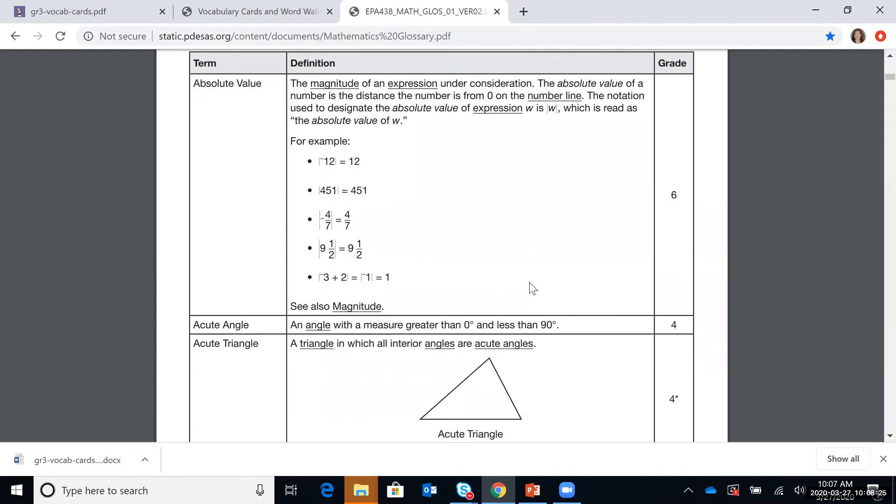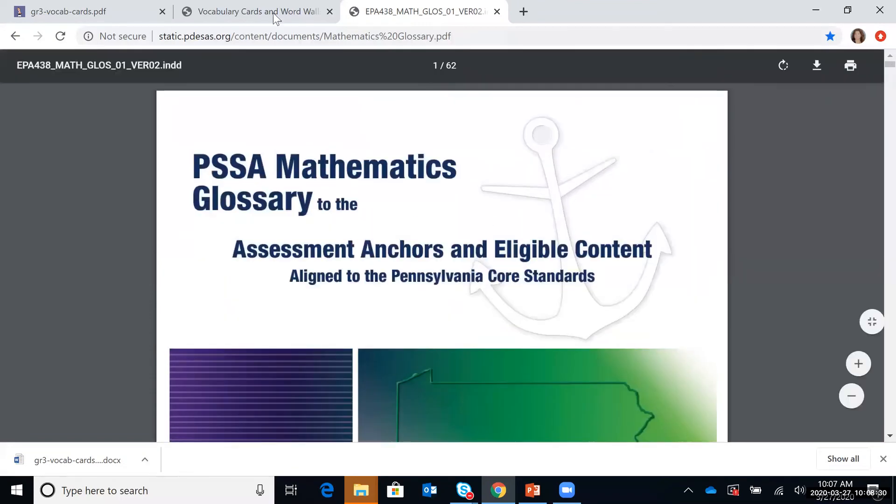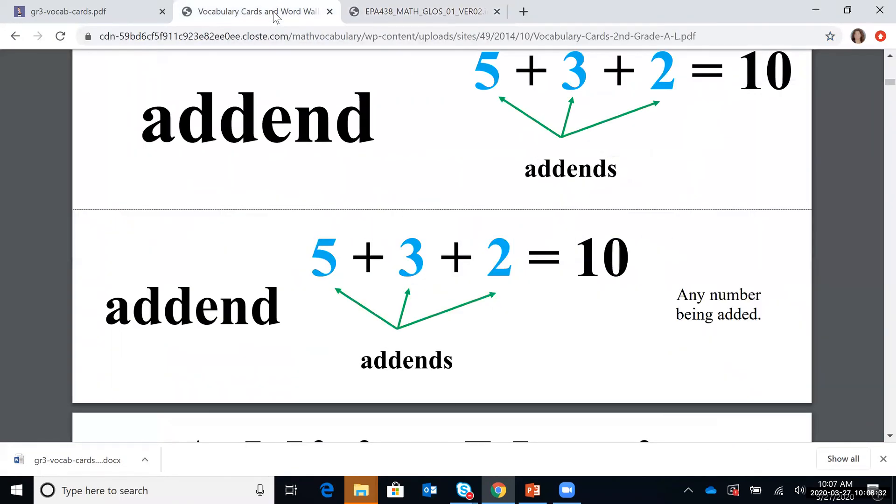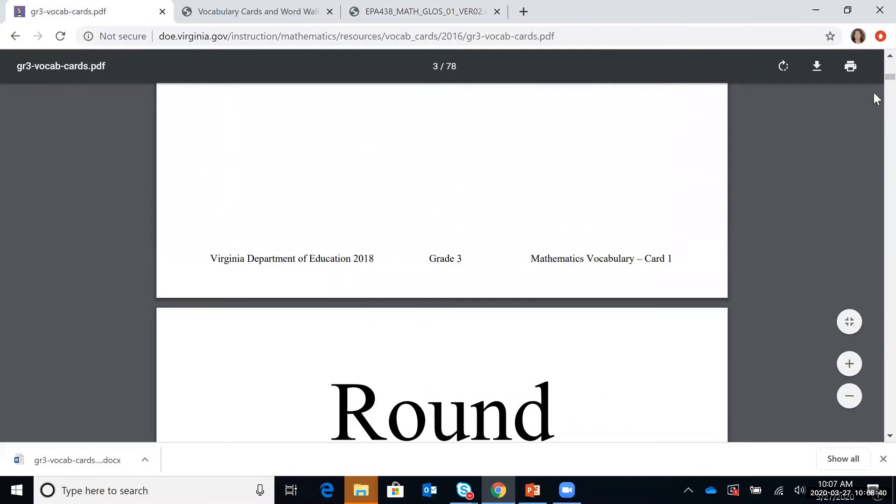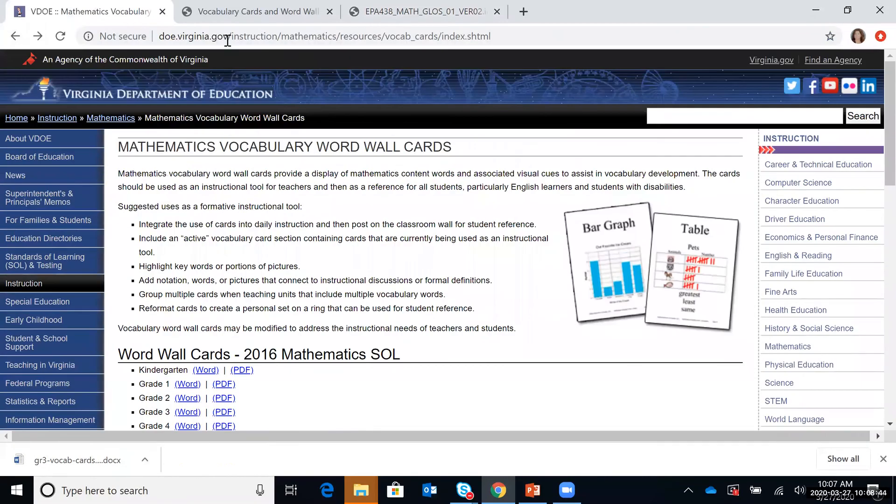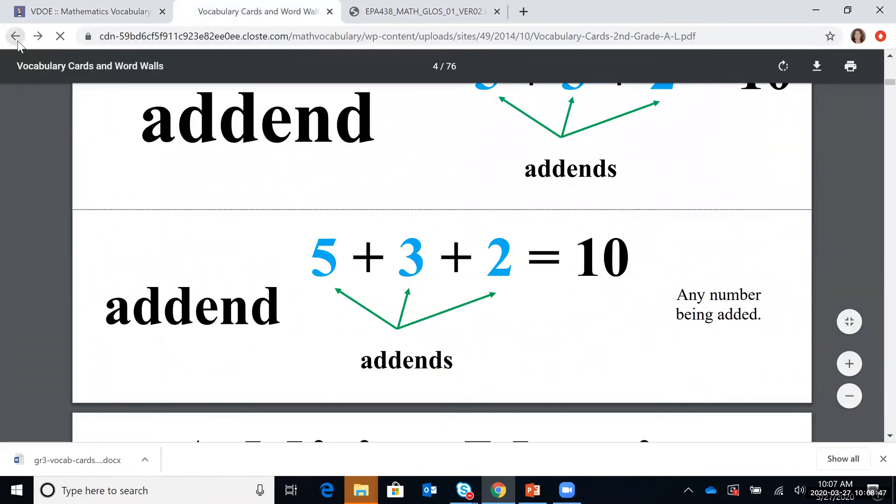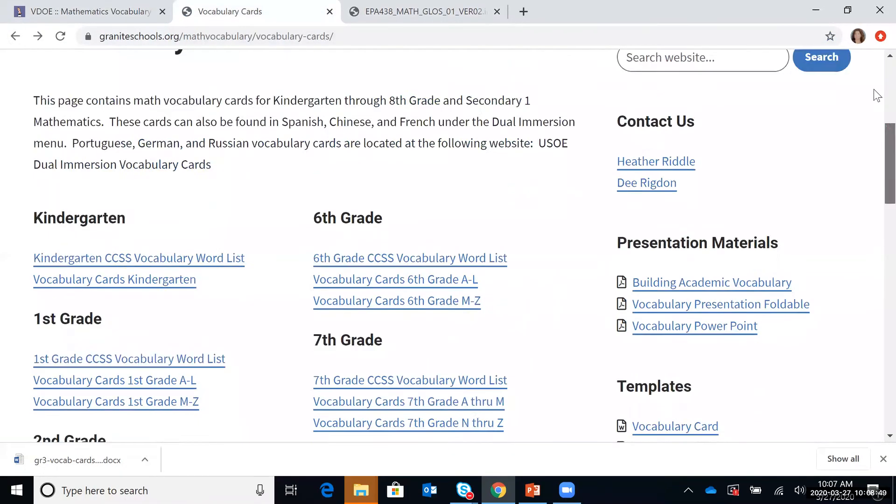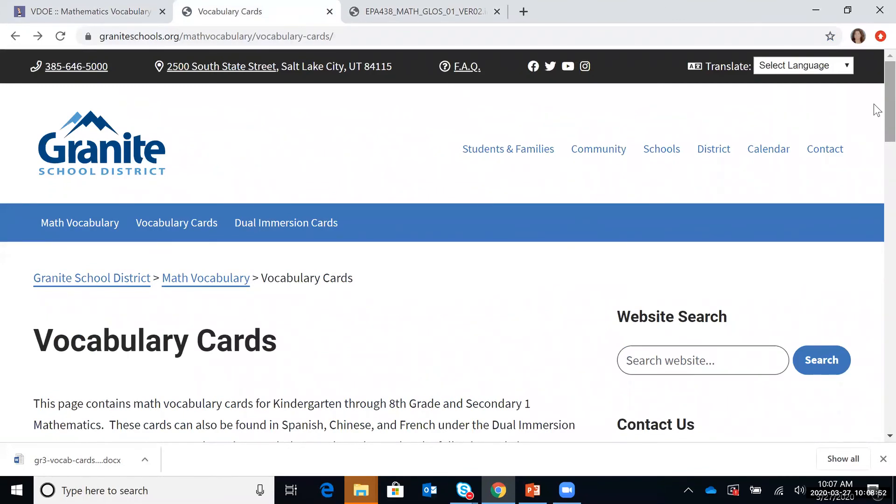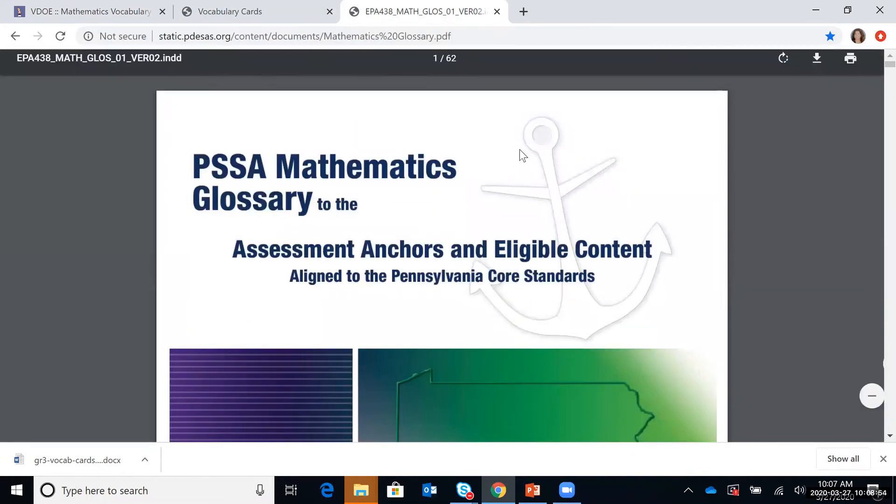Again, for any of these three websites, all that you need to do is use your Google search. I have the websites in the video if you'd like to go back there. Do a Google search. For the first one, use search terms Virginia Department of Education, math vocabulary. For the second one, Granite, G-R-A-N-I-T-E schools, math vocabulary cards. That'll pop right up. And the third one, PSSA mathematics glossary. And you should be able to easily find those.